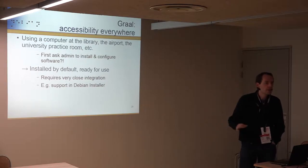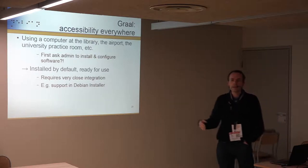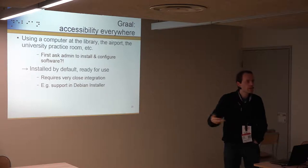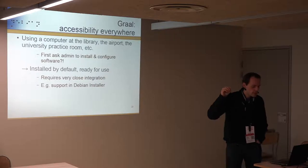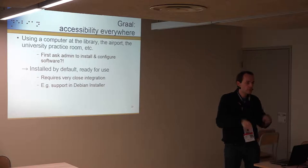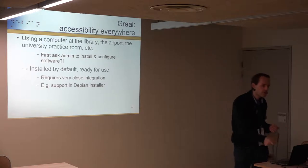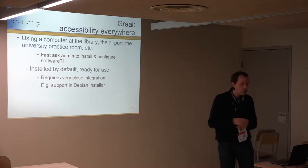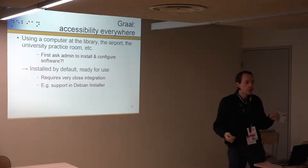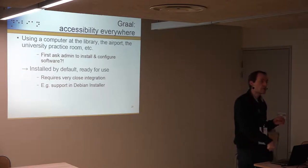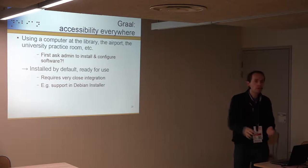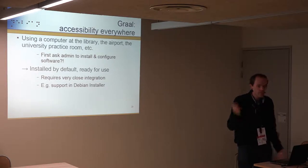The idea is that it's installed by default, ready to use — you just press a shortcut, plug something in, or otherwise trigger enabling the support. In the Debian installer, when you have the boot prompt, you type 'S' and press enter to get speech. If you have a Braille device, you just plug it in via USB and the installer detects it and enables Braille support automatically.